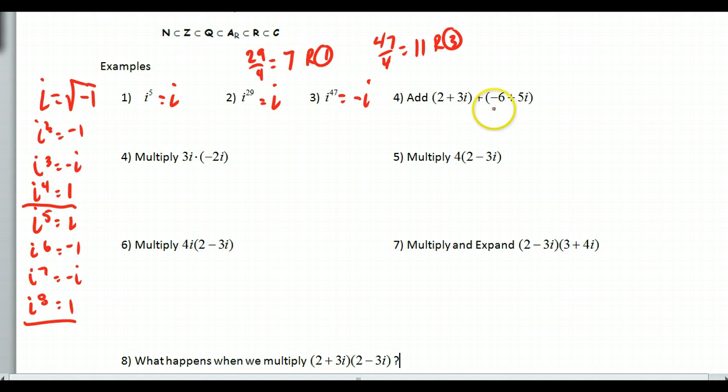Now, getting into complex numbers, if we're adding, we add the real parts with the real parts, and the imaginary parts with the imaginary parts. So, these two go together, and these two go together. So, this would be negative 4 plus 8i. So, that's adding, like adding like terms.